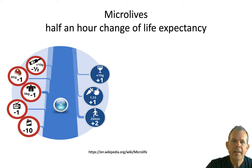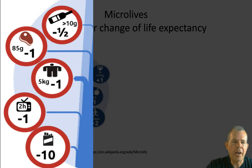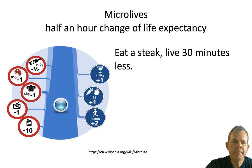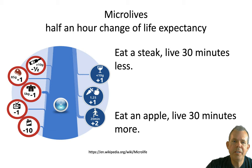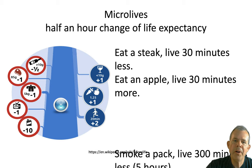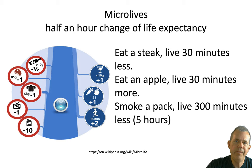Another interesting way to look at this is through micro lives — a half hour of life-changing expectancy. On the unhealthy side: eating a steak will make you live about 30 minutes less on average, and smoking a pack of cigarettes costs you five hours of lifetime. On the healthy side, eating an apple adds 30 minutes to your life expectancy. This isn't a one-to-one thing, but it reflects statistical accuracy over millions of people and millions of hours.